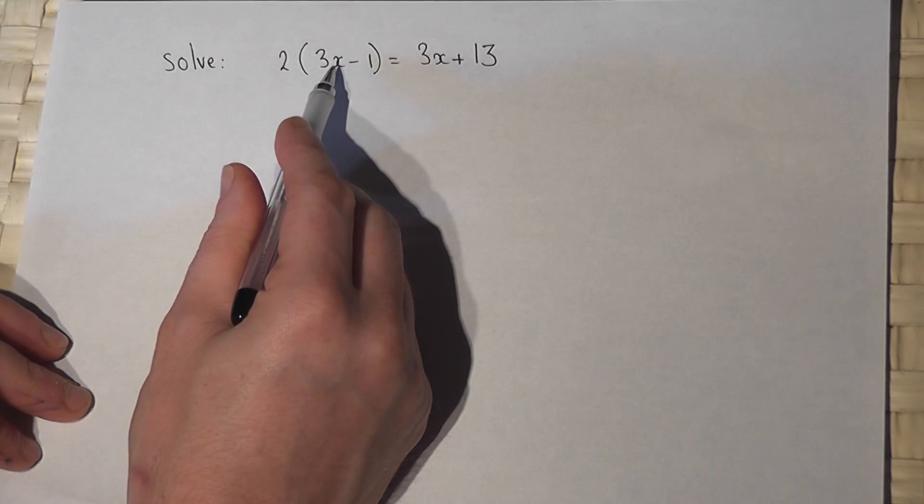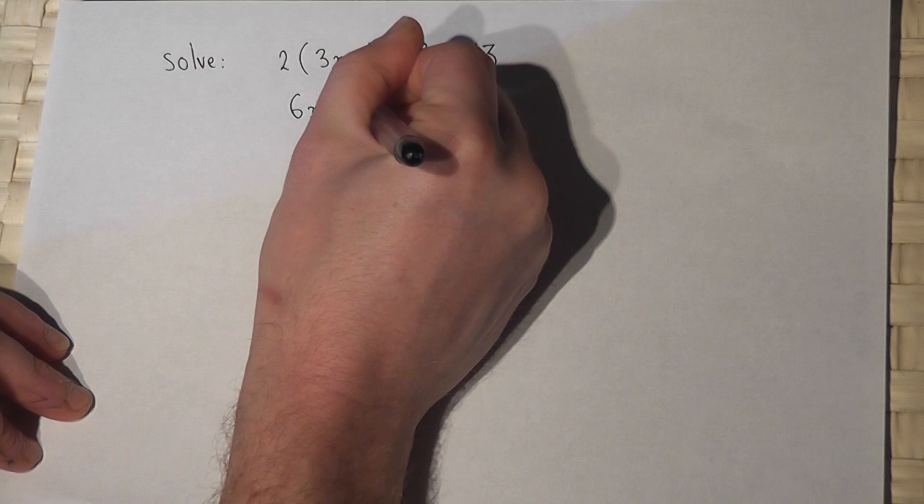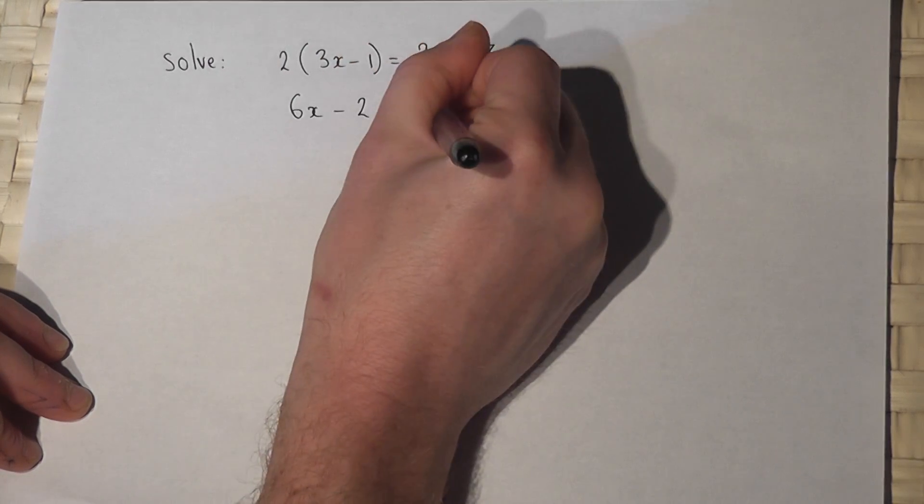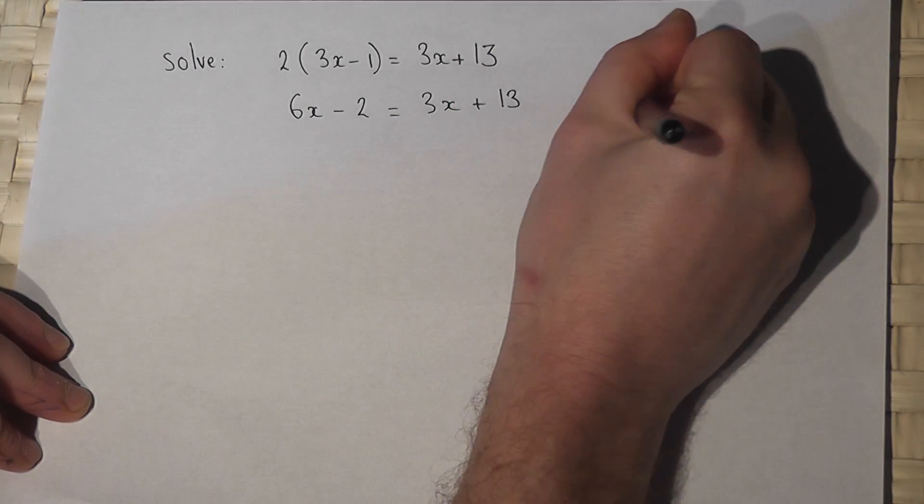So if I times both terms in the bracket by 2 I get 6x take away 2 is equal to 3x plus 13. So I've expanded.